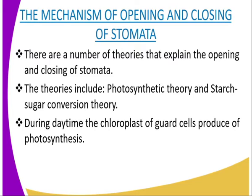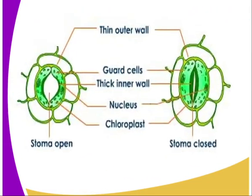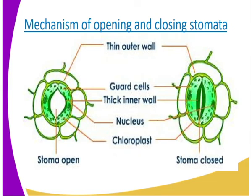At night, however, sugar is converted to starch and accumulates in the guard cells. The osmotic pressure of the guard cells then falls as the cell loses turgidity due to water loss to the adjacent epidermal cells. This condition results in the guard cells becoming plasmolyzed, leading to closure of the stoma. The above theory has been found unsatisfactory, as there are some plants whose stomata open at night and close at daytime. That is the photosynthetic theory.